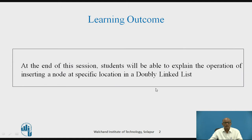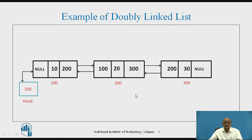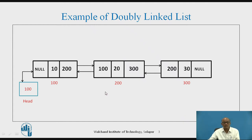The learning outcome of today's session: students will be able to explain the operation of inserting a node at a specific location in a doubly linked list. As we know, this is an example of a doubly linked list in which three nodes are there, and each node has a link in both the forward and backward directions. So this is an example of a doubly linked list.